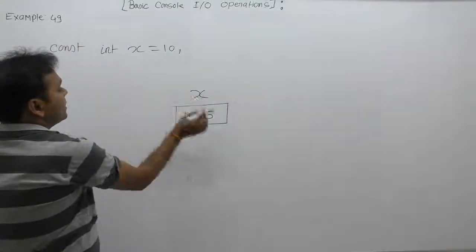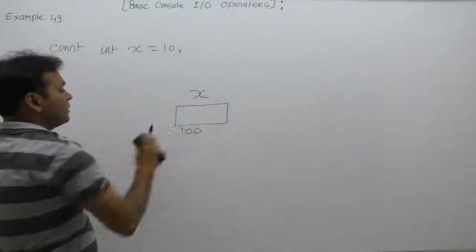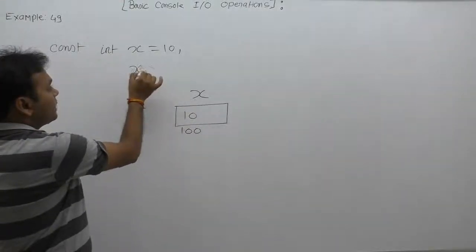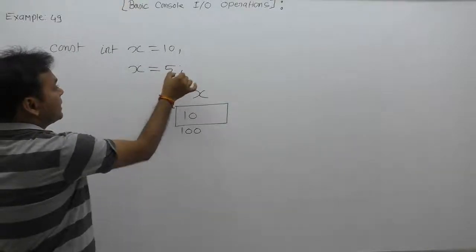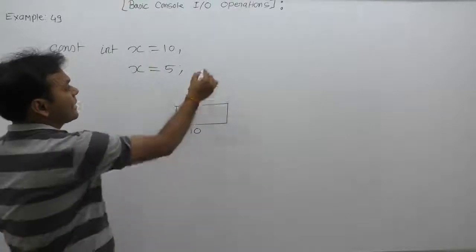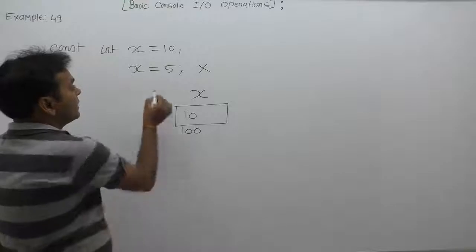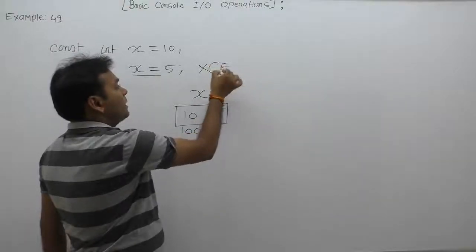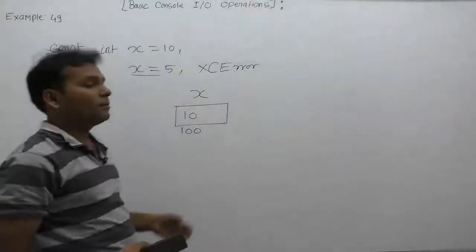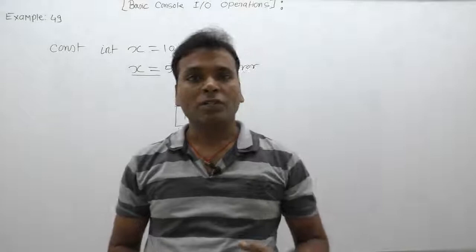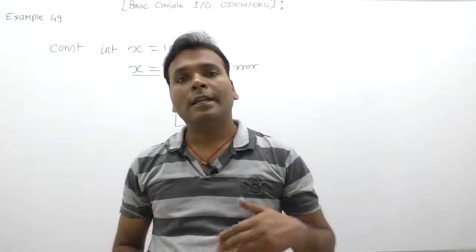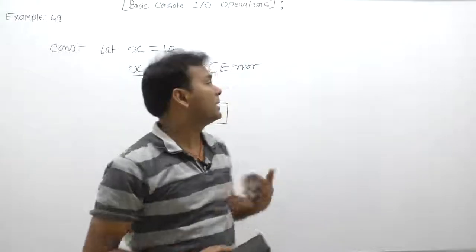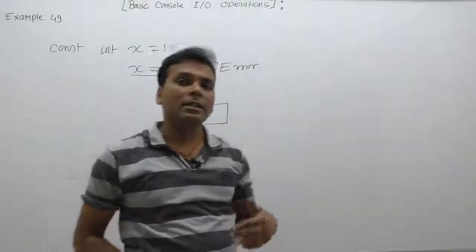We cannot change the value of a constant variable. In the previous case the initial value of x is 10, but here x is a constant, so we cannot assign a new value to x again. In the case of constant variables, initialization is possible but assignment is not allowed. We cannot use the assignment operator with a const variable, and it will cause a compile-time error. A constant variable in C is a variable whose value cannot be changed.